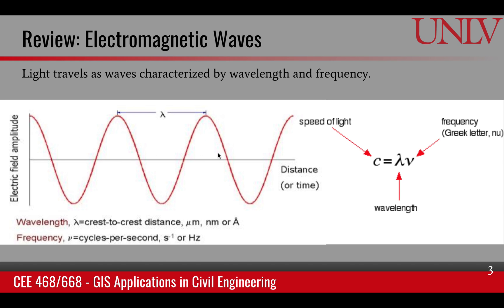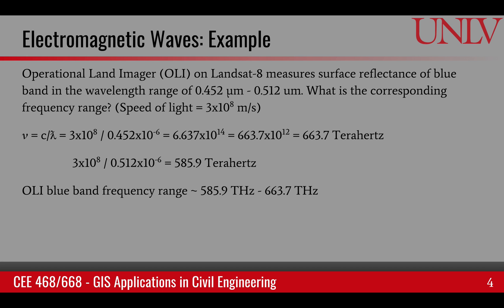If we know the speed of the wave, we can relate the wavelength with the frequency through this equation: the speed of light equals the wavelength of light times the frequency of light. Light comes to us in many frequencies. As an example, consider the Operational Land Imager on Landsat 8.